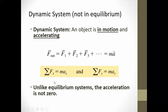We can also break it into components. The sum of all the forces in the x-direction equals the mass times the acceleration in the x-direction. You can also look at the forces in the y-direction: the sum of all the forces in the y-direction equals the mass times the acceleration in the y-direction. Unlike an equilibrium system, the acceleration is not zero.